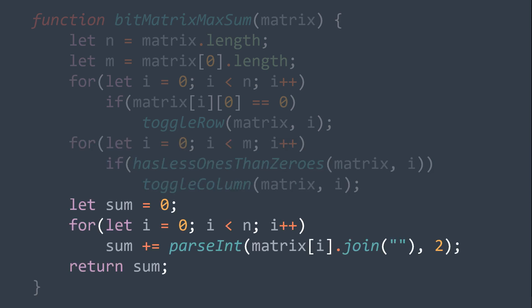Third step, we create a variable sum initialized to 0, then for each row in the matrix, we convert it to a binary string, to be able to convert it to decimal, and we add it to the sum. At the end, we just return the sum we got.